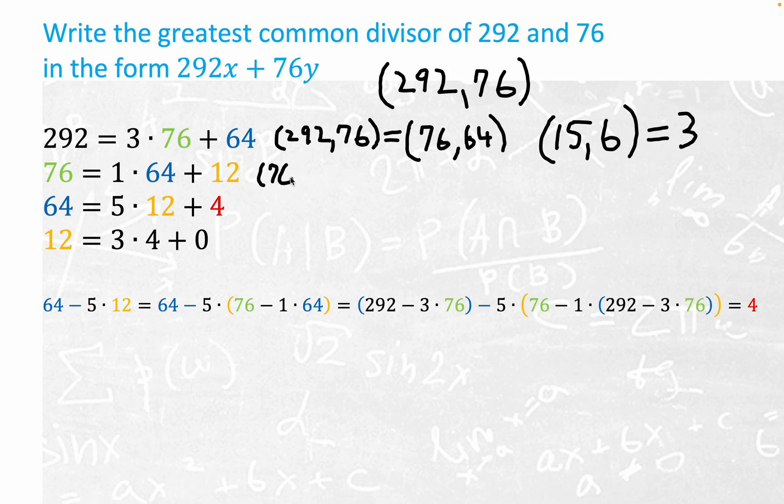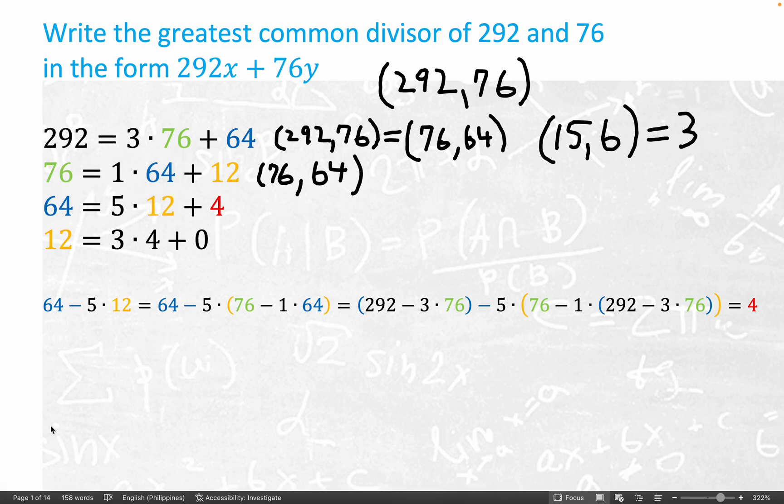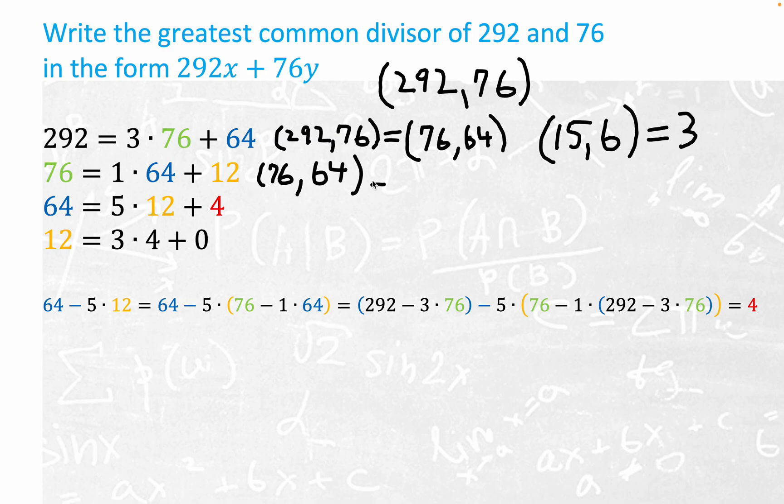The GCD of 76 and 64 necessarily will equal, it's just because of the linkage with these two equations and just some very basic divisibility rules, it has to equal 64 comma 12.